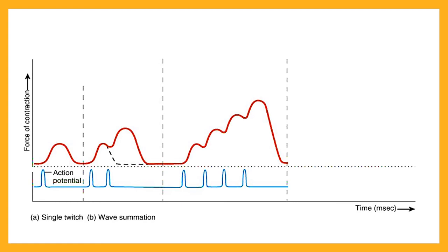This consecutive summation is known as TREP — actually the German word for a staircase, which is exactly what it looks like on the myogram. TREP is also sometimes referred to as unfused or incomplete tetanus, which gives us a clue as to what the final section of this myogram will reveal.